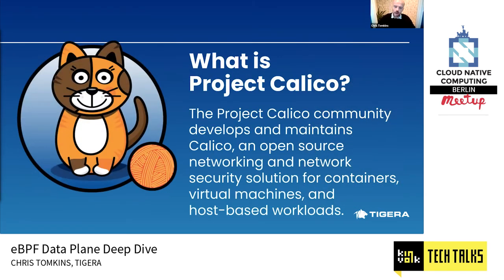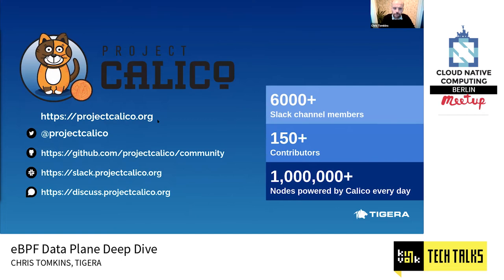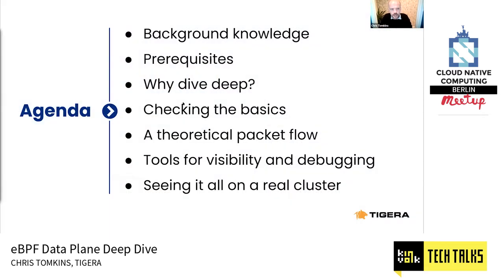Hopefully you know what Calico is, but if not: the Project Calico community and Tigera develop and maintain Calico, which is an open-source networking and network security solution for containers, virtual machines, and host-based workloads. We have more than 6,000 people in our Slack, more than 150 contributors, and more than a million nodes powered by Calico every day. There are lots of ways to get involved — the Calico users Slack is a particularly good one.